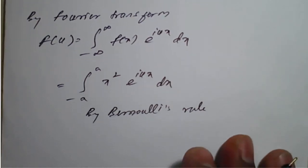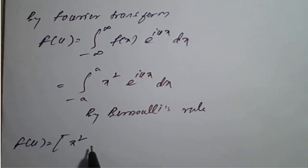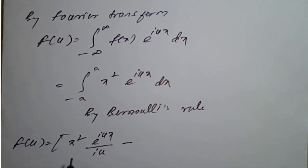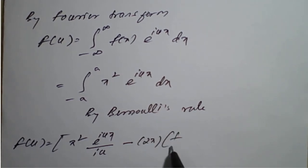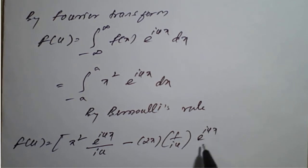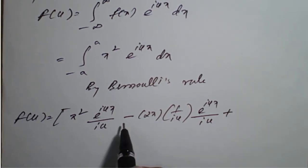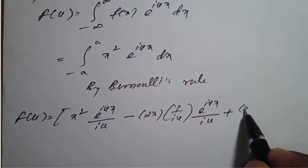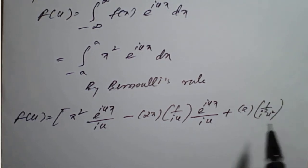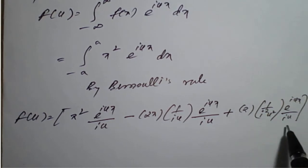By Bernoulli's rule of integration, F(u) equals: keep x² as it is, integration of e raised to iux is e raised to iux divided by iu. Then the differentiation of x² is 2x, multiplied by 1 upon iu, times the integration of e raised to iux, which is e raised to iux divided by iu. Then differentiation of 2x is 2, multiplied by 1 upon iu times 1 upon iu, which becomes 1 upon i² u², times the integration of e raised to iux, which is e raised to iux divided by iu. Since the differentiation of 2 is 0, we close the limit from minus a to plus a.